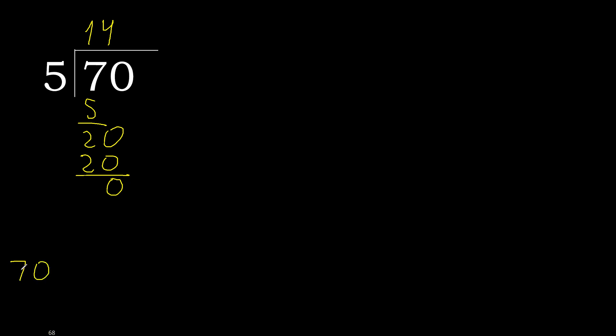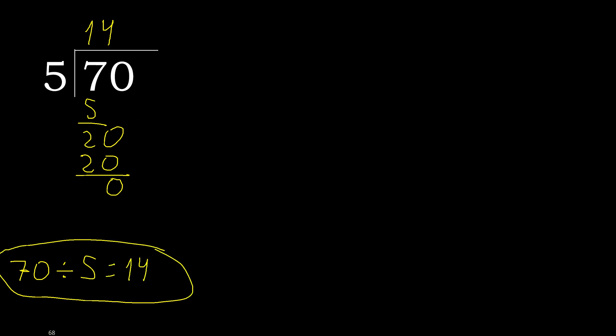Therefore, 70 divided by 5 is 14. Finish.